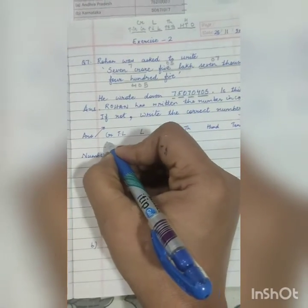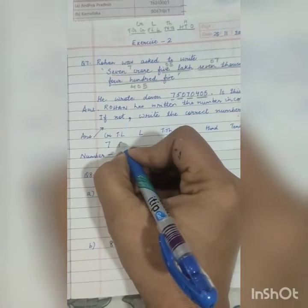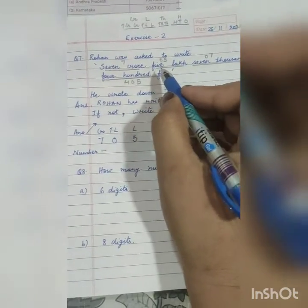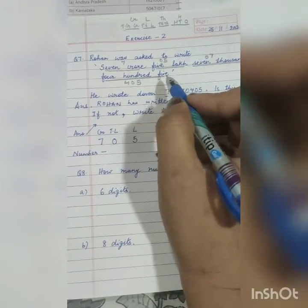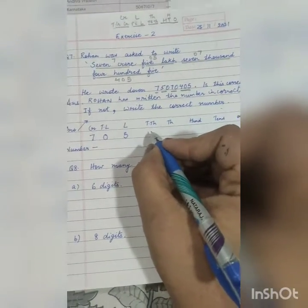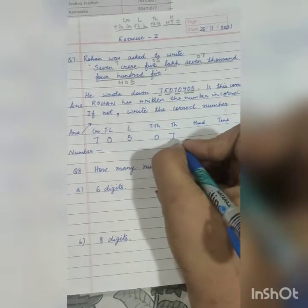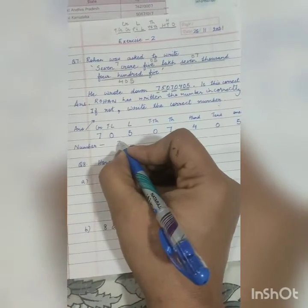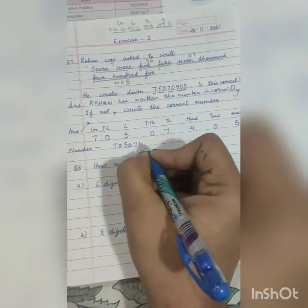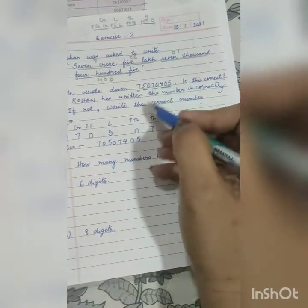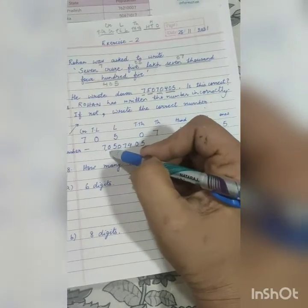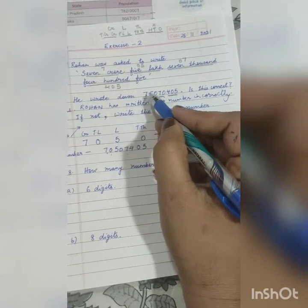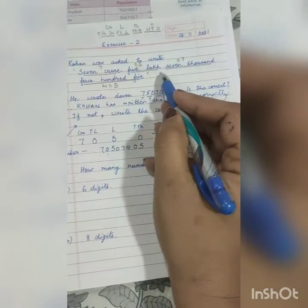So the answer is 7 crore, in 10 lakh place we will put 0 because there is nothing, 5 lakh because it should be in the lakh place. Something like 50, 30, 20, 60 should be there in lakh. Now in thousand also there is nothing in 10 thousand place, so 0, then 7 thousand, then 405. So children now if you add this, the number becomes 7 0 5 0 7 4 0 5. Look, ours and his are different. In his it's 75, so his number became 7 crore 50 lakh, whereas we were told 5 lakh, so this is wrong.